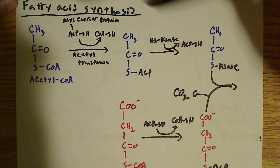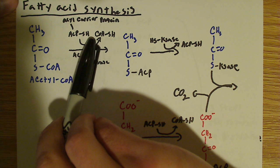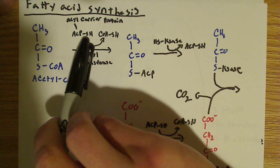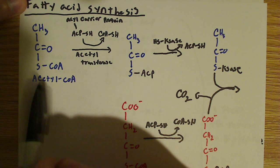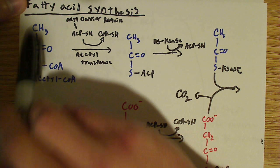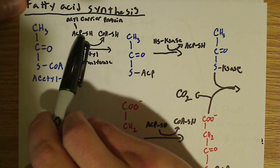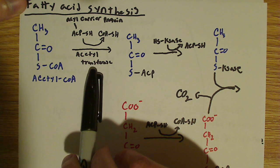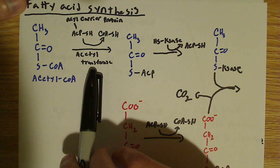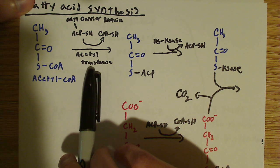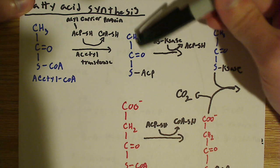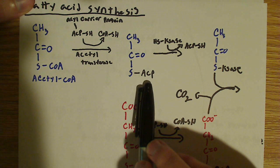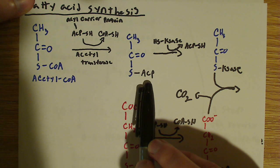So we have this acetyl-CoA, and we have this ACP-SH — that is acetyl-carrier protein. We need to transfer the acetyl group, the two-carbon group, to this ACP. And that's exactly what happens here — this is done by acetyltransferase, the enzyme that catalyzes the reaction. What we wind up with are these two carbons from the original acetyl-CoA molecule, now attached to ACP, or the acetyl-carrier protein.